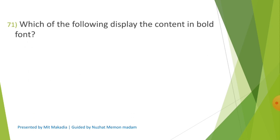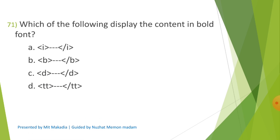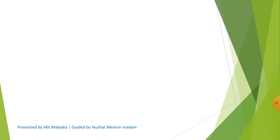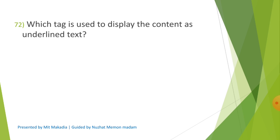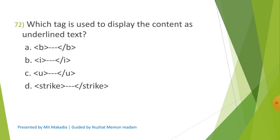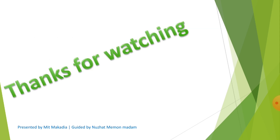Question 71: Which of the following displays the content in bold font? Options are A) I tag, B) B tag, C) D tag, D) TT tag. The correct answer is B) B tag. Question 72: Which tag is used to display the content as underlined text? Options are A) B tag, B) I tag, C) U tag, D) Strike. The correct answer is C) U tag. That is all for the day, thanks everyone.